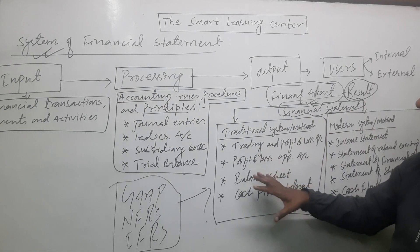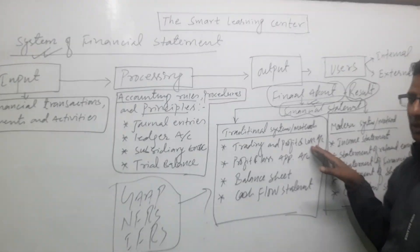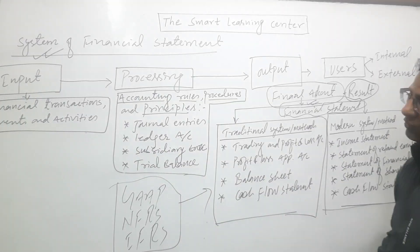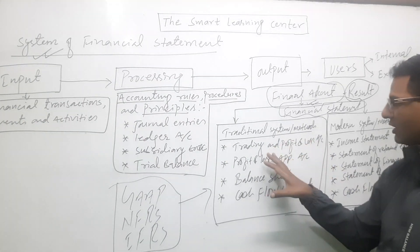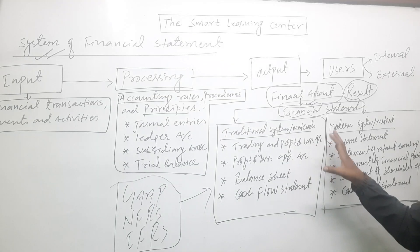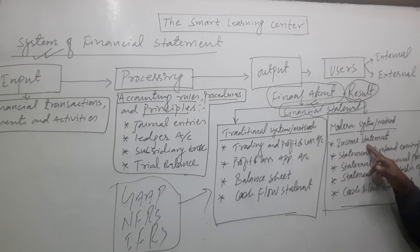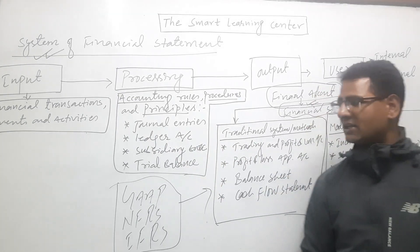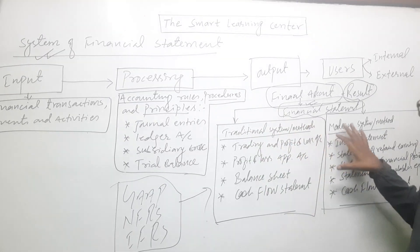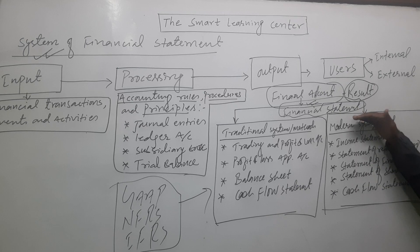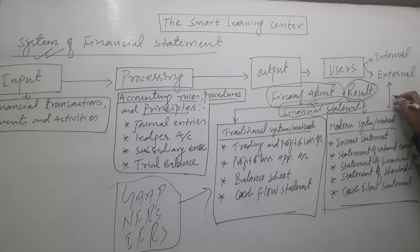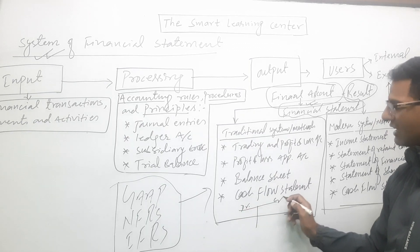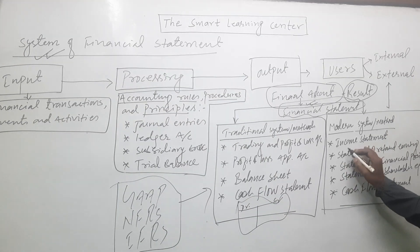In the traditional system, the final account includes a trading account and a profit and loss account, which shows net profit or loss — whether the business made a profit or a loss. In the modern system, it is called an income statement. In the traditional system, the format is horizontal with debit and credit sides, while in the modern system, it is presented in a vertical format.